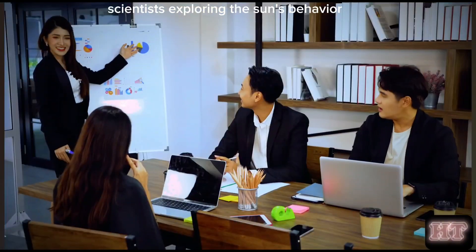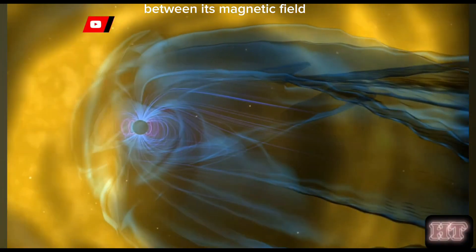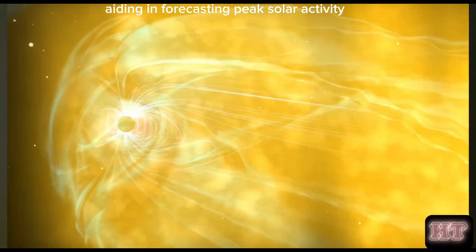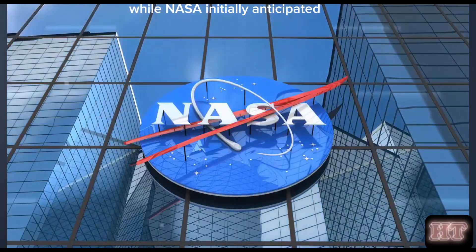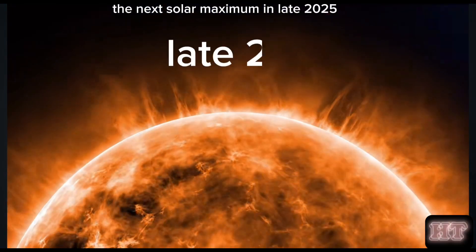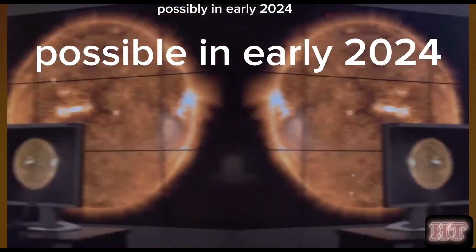Scientists exploring the sun's behavior have uncovered a fresh connection between its magnetic field and sunspot cycle, aiding in forecasting peak solar activity. While NASA initially anticipated the next solar maximum in late 2025, a recent study by Dr. Deepan Dunandi suggests an earlier arrival, possibly in early 2024.